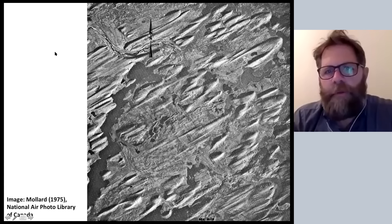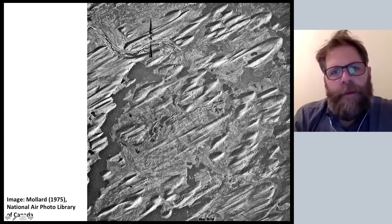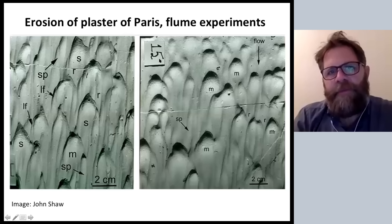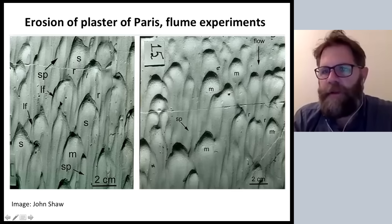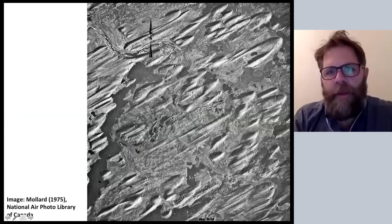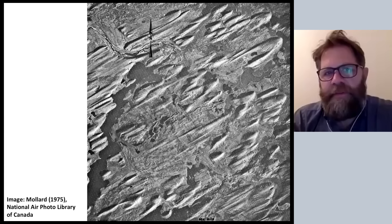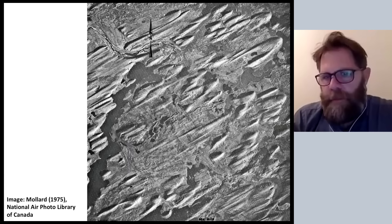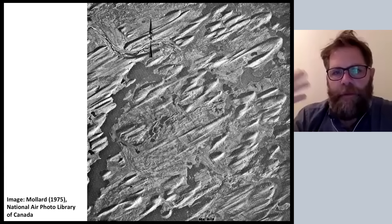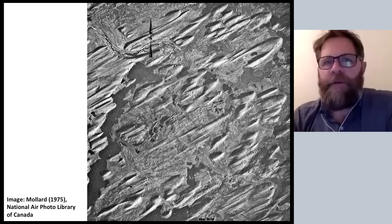I think this is the Snare Lake drumlin field in northern Saskatchewan or Northwest Territories. If you look at some of these drumlins there are some really elongate ones and some that are broader, more parabolic in shape, flanked by others that tend to be more symmetrical. We can go back to what we see in the plaster of paris and we see the same sort of spatial patterns and distribution. The scales are totally different — this is two centimeters in plaster of paris and this is probably about six or eight kilometers across the picture — but we see similarities in the patterns and forms.